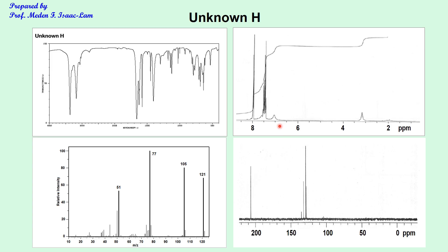The proton NMR chemical shift unit is ppm, or parts per million, and it goes from 0 to 10 or 12. The carbon-13 is the same chemical shift unit, delta ppm, and it goes from 0 to about 220.